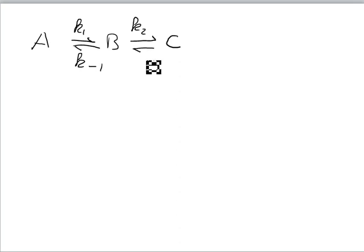We have compound A is converted into B at a rate constant k1 and this is a reversible reaction so we have got k-1, then B is converted into compound C at a rate constant k2 and also this is a reversible reaction.